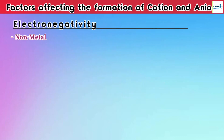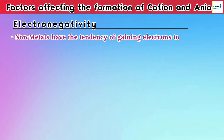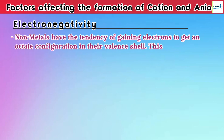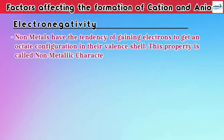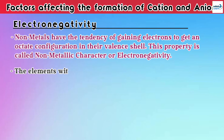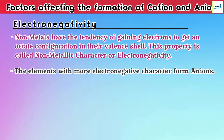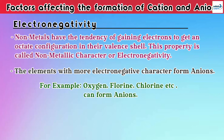Similarly, non-metals have the tendency of gaining electrons to get an octet configuration in their outermost shell or valence shell. This property is called non-metallic character or electronegativity, and elements with more electronegative character form anions. Some examples are oxygen, fluorine, chlorine, etc.